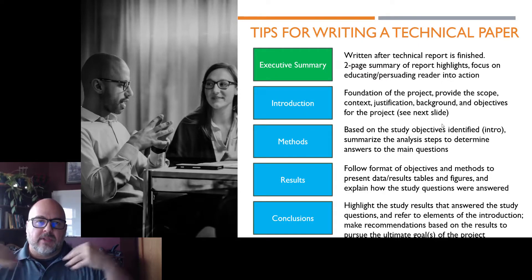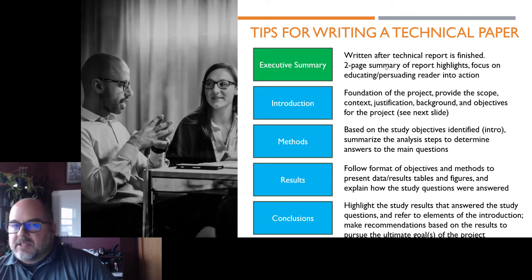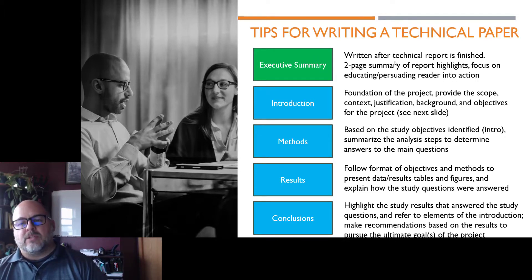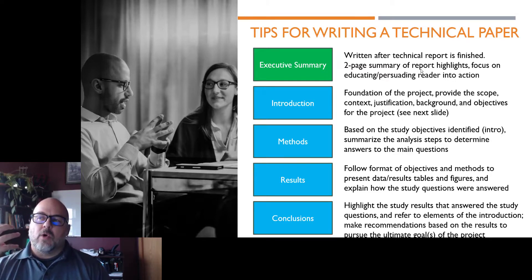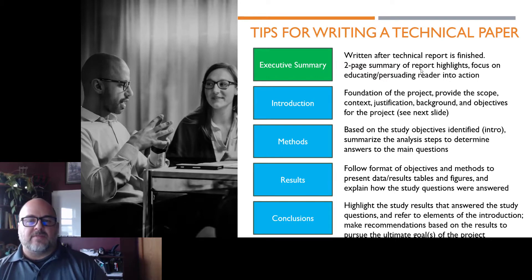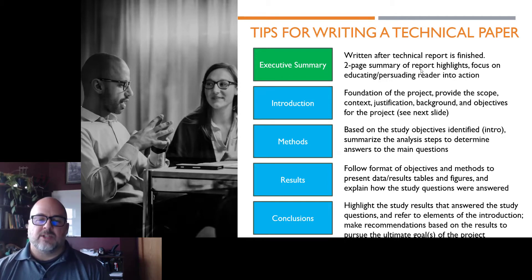Tips for writing the technical paper. The executive summary is not written first, but it's put first. This is probably the only thing that managers are going to read. It's built off of everything else you've done, but you have two pages and your best figures and tables to educate management on — these were the highlights of the study, here are some opportunities to invest in the safety program, and this is what's going to save the company if we can realize these recommendations. That's what we're all working toward — trying to get management to invest.